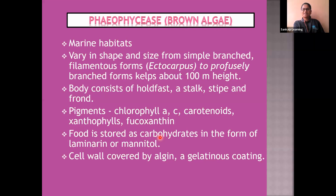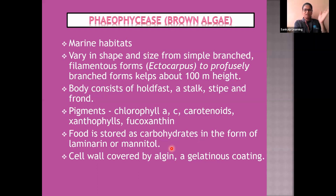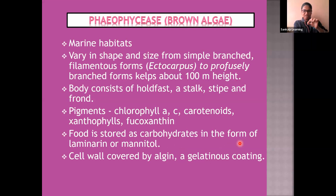Food is stored as carbohydrates in the form of laminarin or mannitol. Just as animals store food as glycogen and plants store it as starch, brown algae store food as laminarin or mannitol. The cell wall is covered by algin, a gelatinous coating.